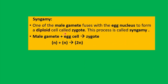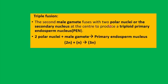One male gamete fuses with the egg nucleus to form a diploid zygote — this is syngamy. The male gamete is haploid and the egg cell is also haploid, so they fuse to give a diploid zygote which develops into the embryo. In triple fusion, the second male gamete fuses with the two polar nuclei or secondary nucleus to produce a triploid primary endosperm nucleus (PEN). Two polar nuclei, each haploid, fuse with the haploid male gamete to give 3N PEN. Syngamy and triple fusion occur simultaneously — this is double fertilization.